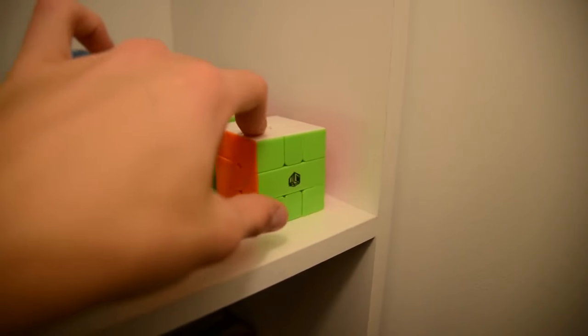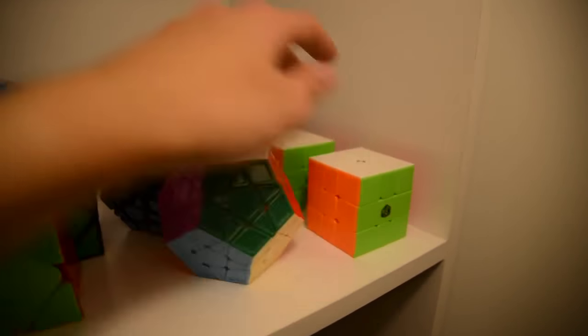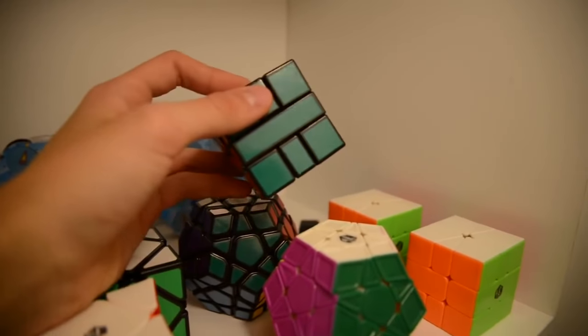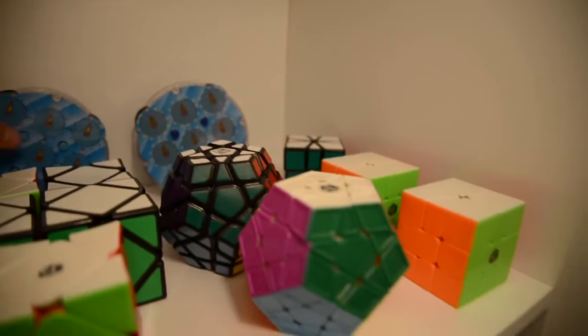Here we have the Qiyi Volt square-1. Here we have another Qiyi Volt square-1. And here we have just a bad square-1 that I don't know the name of.